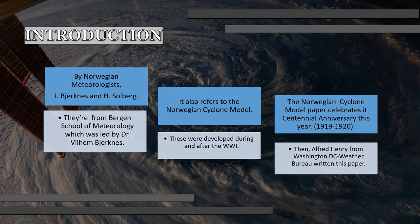Vilhelm Bjerknes was also the assistant of Heinrich Hertz in the discovery of electromagnetism, and he founded the Geophysical Institute at the University of Bergen. This paper focuses on the Norwegian Cyclone Model, which is associated with names such as Extratropical Cyclones, Mid-Latitude Cyclones, and Wave Cyclones. They discovered this during and after World War I, and this year the Norwegian Cyclone Model paper celebrates its centennial anniversary since it was published in the winter of 1919 to 1920.